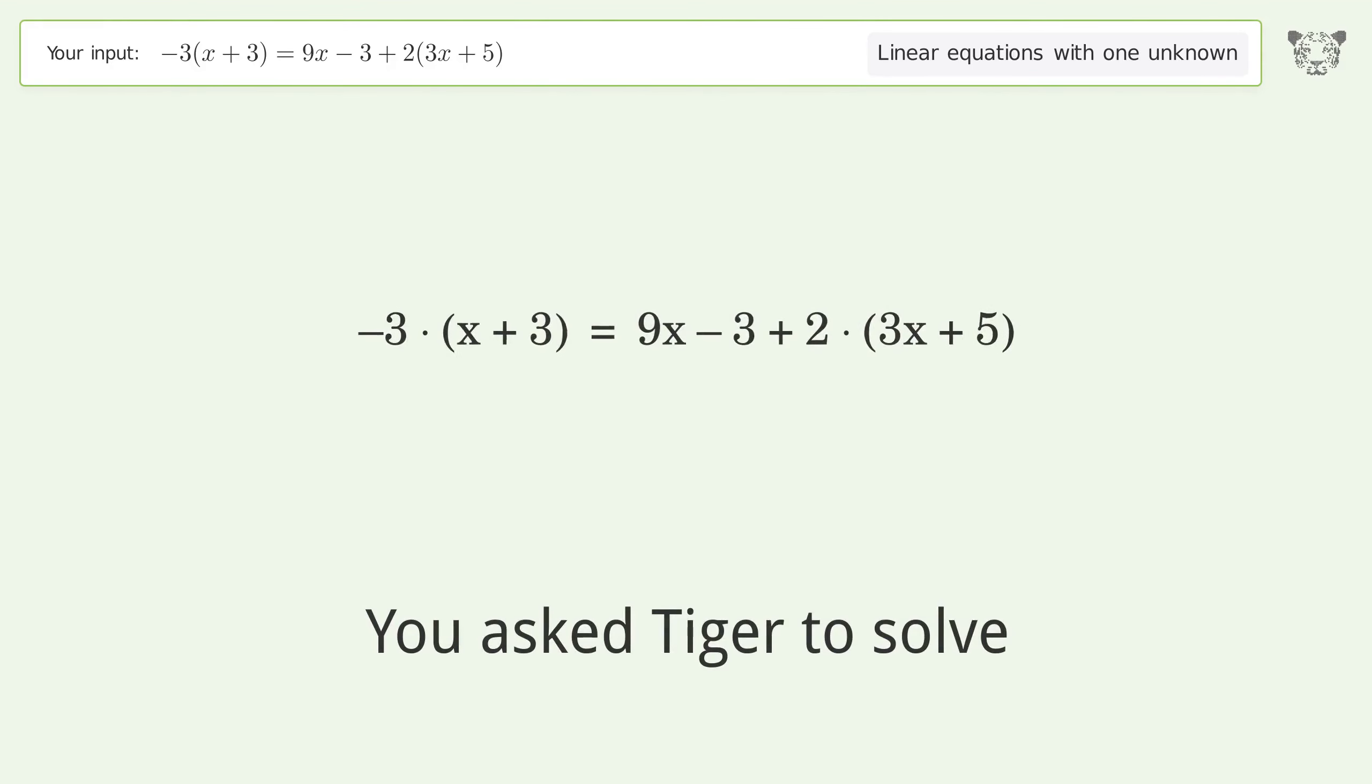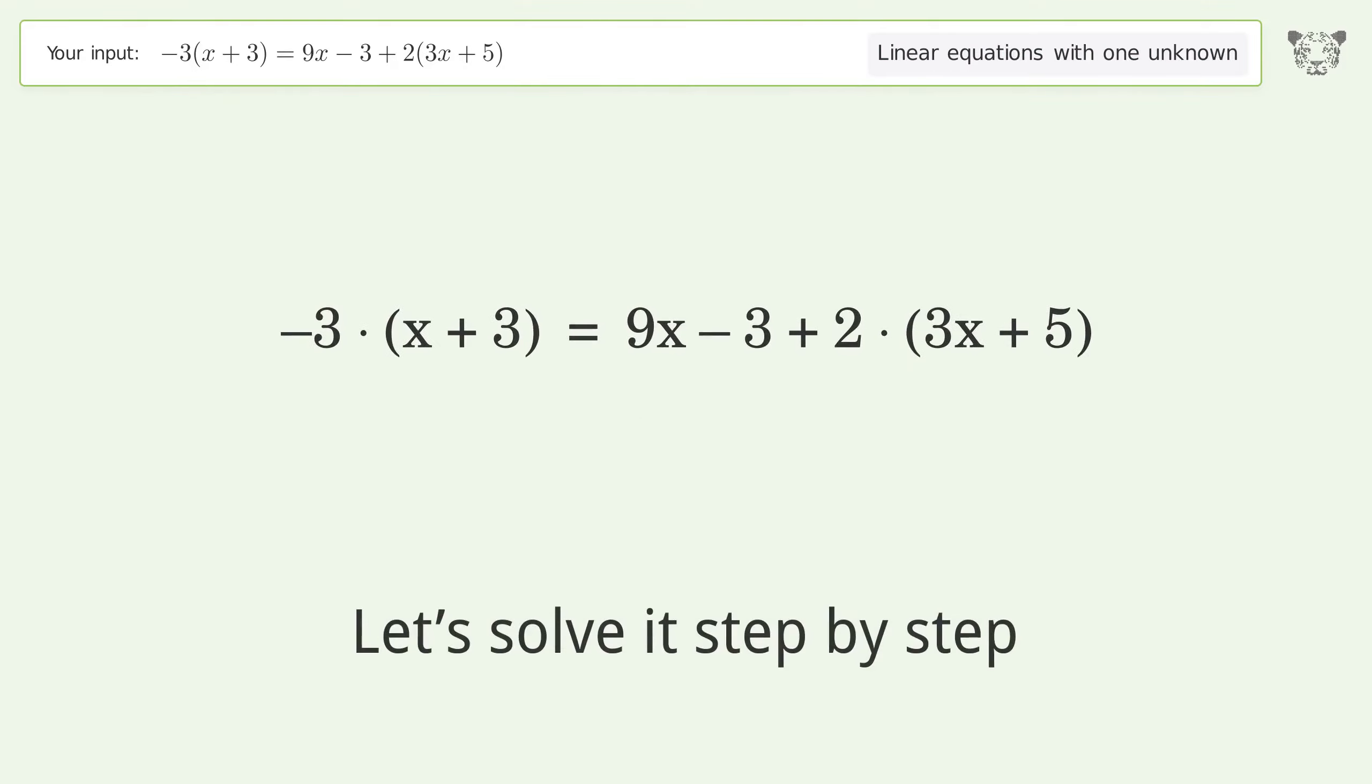You asked Tiger to solve this, which deals with linear equations with one unknown. The final result is x equals negative 8 over 9. Let's solve it step by step.